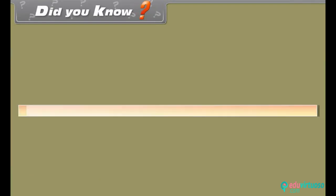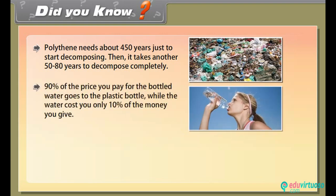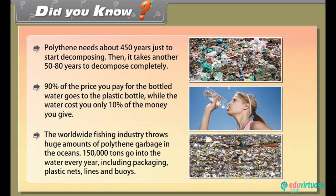Did you know? Polythene needs about 450 years just to start decomposing, and then it takes another 50 to 80 years to decompose completely. 90% of the price you pay for bottled water goes to the plastic bottle, while the water costs only 10%. The worldwide fishing industry throws huge amounts of polythene garbage into the oceans — 1,50,000 tons go into the water every year, including packaging, plastic nets, lines and buoys.